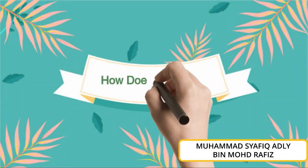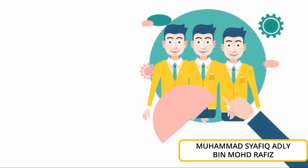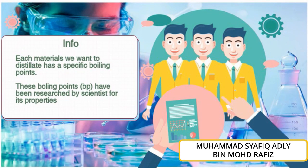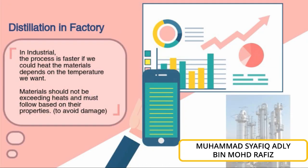Now we have seen how the distillation column works. Let us see how it operates. Each material that the company wants to produce has a specific boiling point. The boiling point is the temperature at which a material reaches its peak temperature before it is turned into another element. In industry, the process is faster if we heat the material to the desired temperature. Also, the materials cannot exceed their maximum temperature or else they would be damaged.